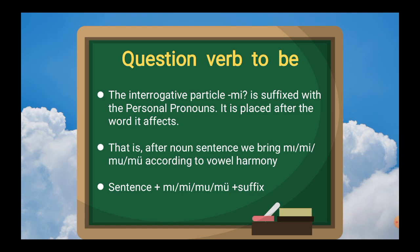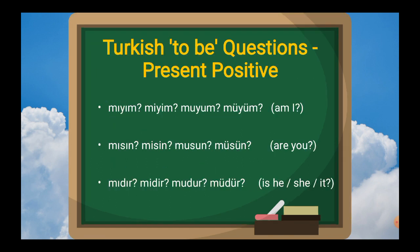Also, after mı, mi, mu, mü, we bring Turkish personal pronoun suffixes. For 'am I?': mı plus ım, mi plus im, mu plus um, mü plus üm. If the word ends in a vowel: m plus yım, mi plus yim, mu plus yum, mü plus yüm — giving miyim, etc.